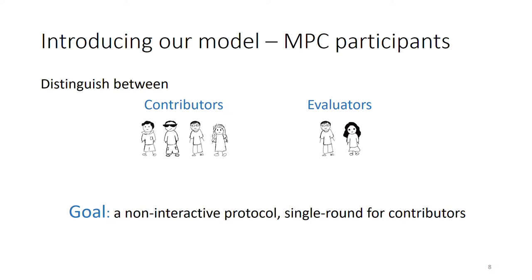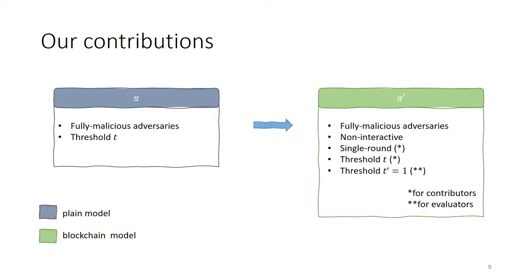In this model, our goal will be to provide a solution for MPC which satisfies the property that MPC participants are not required to interact with each other, and MPC contributors who are not interested in learning the output can go offline after a single round. More formally, we show that any MPC protocol Pi, which is secure against fully malicious adversaries, can be transformed into another MPC protocol Pi' in the blockchain model, which is also secure against fully malicious adversaries and does not require participants to interact with each other.